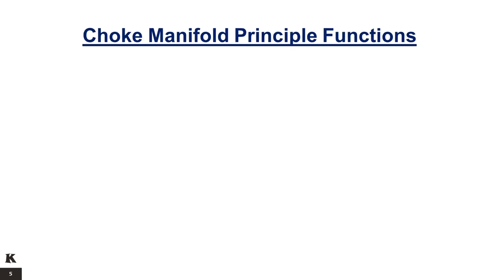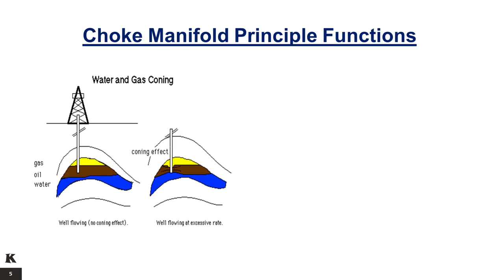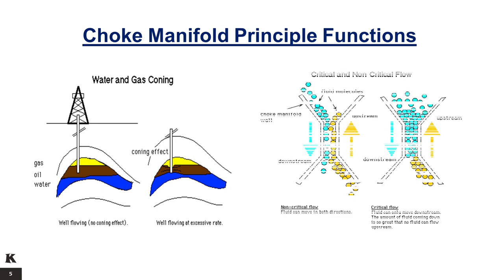The principal functions of the choke manifold include: a safety function by controlling the well head pressure; it allows different choke sizes to control the flow rate; it prevents water and gas coning by limiting the flow rate; it prevents formation sand from entering the well by limiting the flow rate; and it ensures critical flow where pressure fluctuations downstream of the choke manifold do not affect downhole pressure and flow rate of the well.